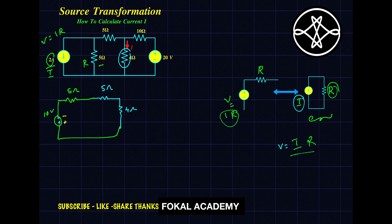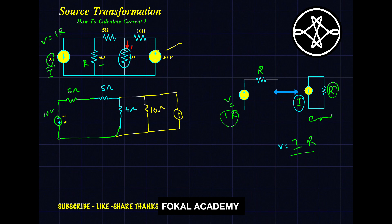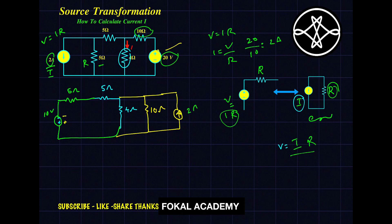Now on the right side, convert the voltage source to a current source. The resistor comes into parallel — 10 ohms in parallel. The voltage becomes a current source. The plus terminal is here, so the current direction is upward. According to Ohm's law, I = V/R = 20/10 = 2 amperes. Now the two 5 ohm resistors are in series, so the total resistance is 5 + 5 = 10 ohms.